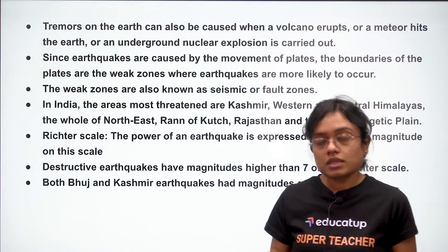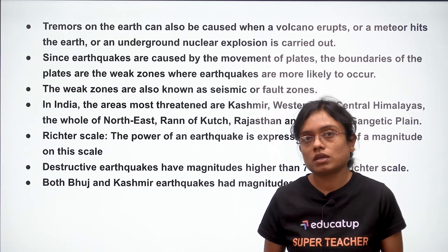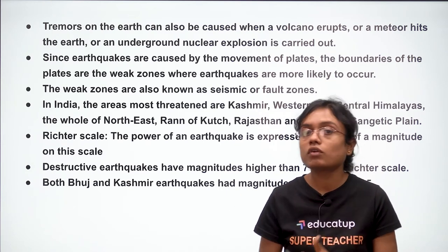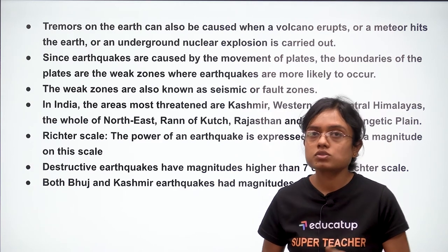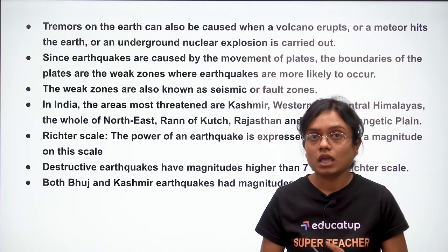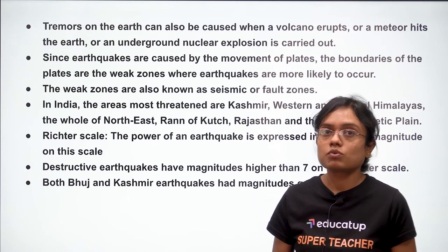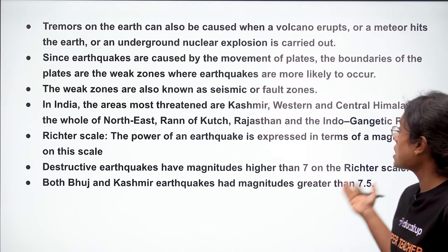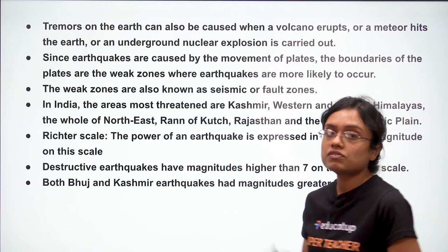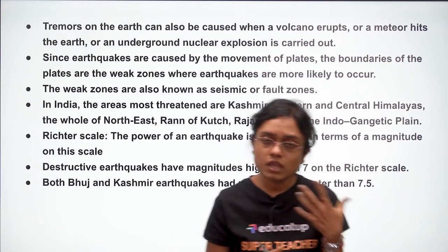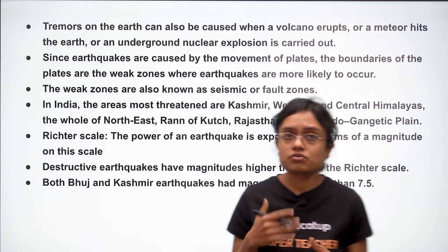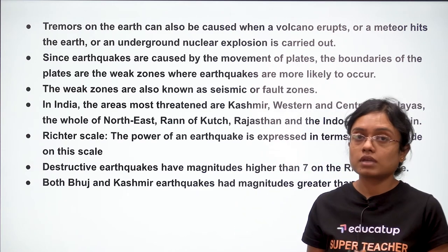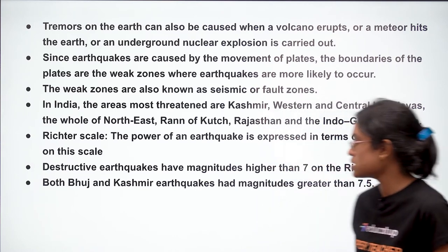Earthquakes can also be caused by a volcano eruption, a meteor hitting the earth, or an underground nuclear explosion — all of which lead to shaking or displacement of the earth's plates. The boundaries of the plates are weak zones where earthquakes are more likely to occur. In India, the most threatened areas are Kashmir, western and central Himalayas, the entire northeast, Rajasthan, and the Indo-Gangetic plain. The Richter scale measures the magnitude of earthquakes, and those with a magnitude of 7 or higher are highly destructive. Both Bhuj and Kashmir earthquakes had magnitudes greater than 7.5.